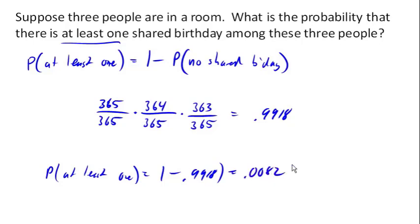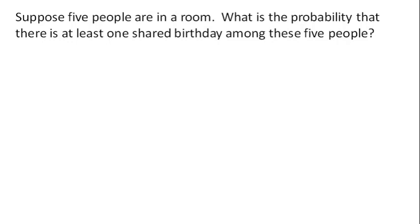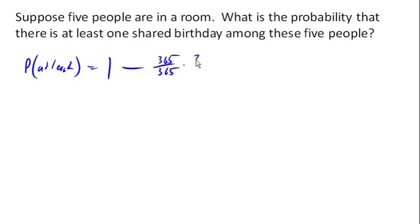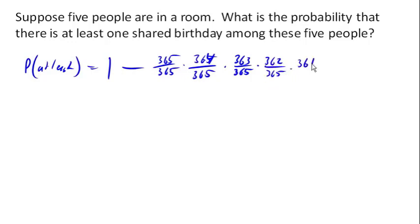Let's make our group a little bigger — suppose we've got 5 people in the room. The probability of at least one shared birthday is again 1 minus the probability of no shared birthdays. The first person can pick any day they want — 365/365. The second person gets 364 choices out of 365. We continue this for each person in the room, multiplying the fractions for each additional person to get our answer.